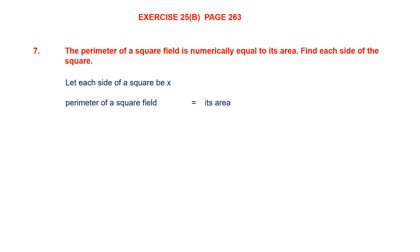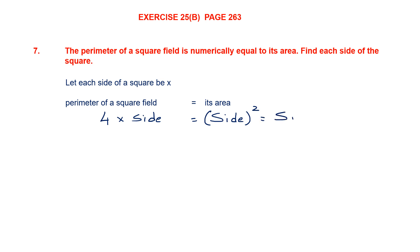We have been given that the perimeter of the square field is equal to its area. What is the formula to find the perimeter? It is 4 into side. And the formula to find area is side squared, which is side into side.